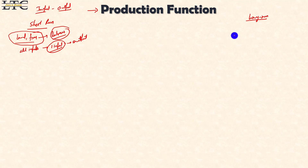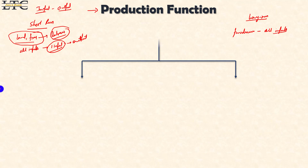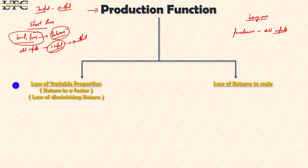In the long run production function, all inputs can change because this is a long run time period. So we can buy new firms, new land, labor, and capital. In the short run, we study the law of variable proportion, which we call return to factor and law of diminishing returns. In the long run, we study the law of return to scale, because we change all inputs.